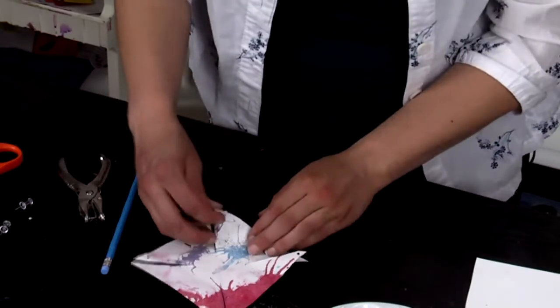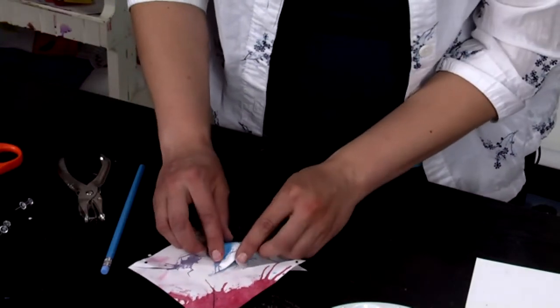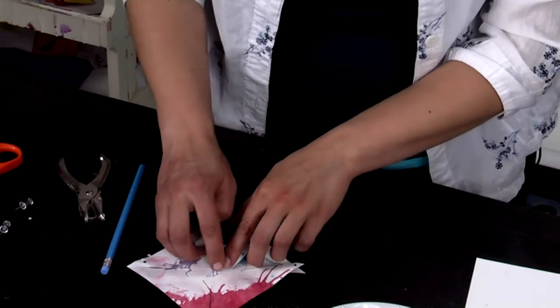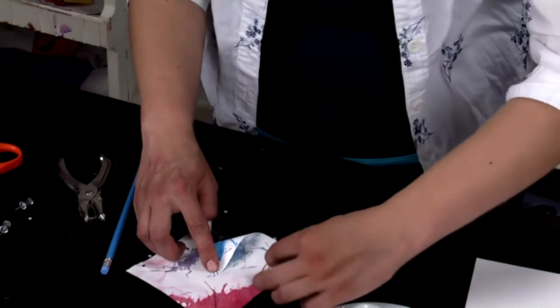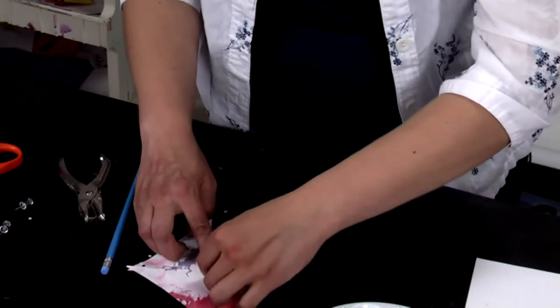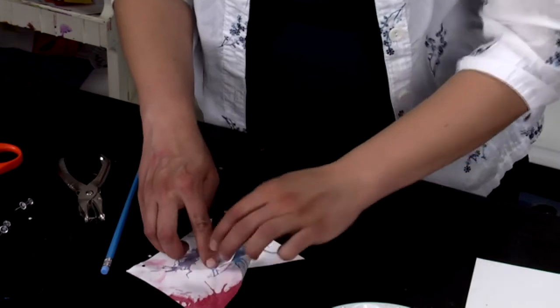After you have your holes punched, go ahead and fold down. Don't crease your folds but fold the corner down to the center. Go ahead and keep doing each one. Line up your holes.